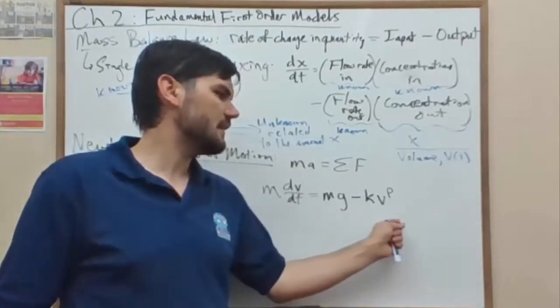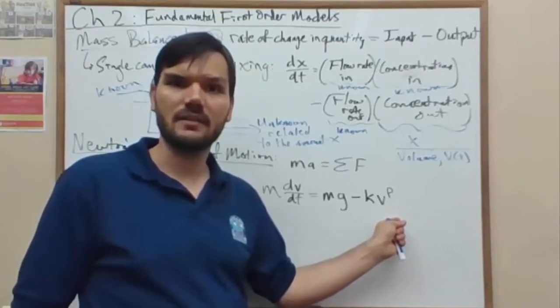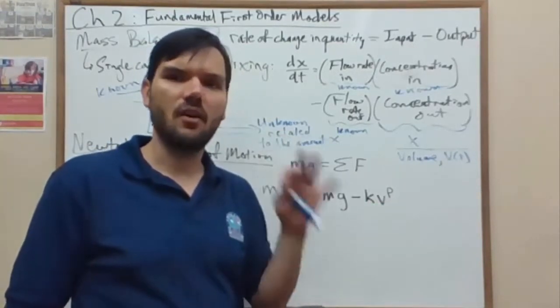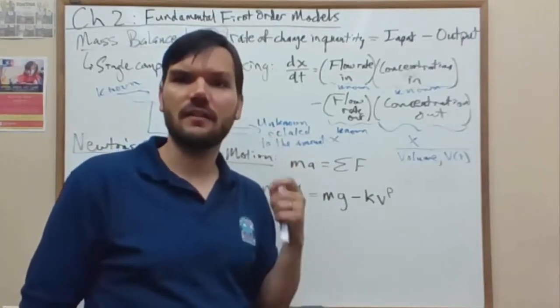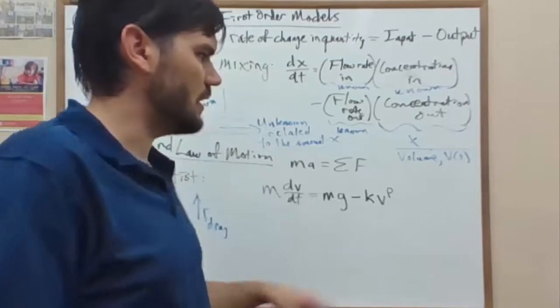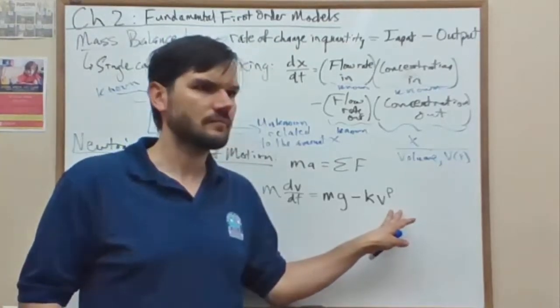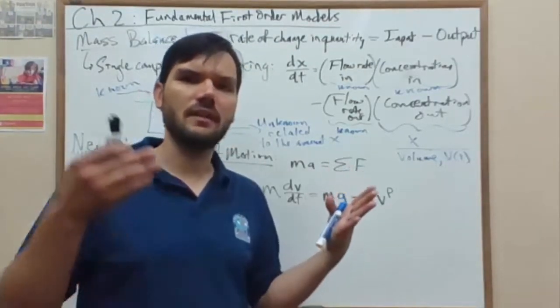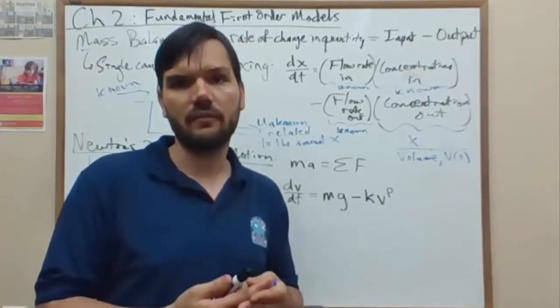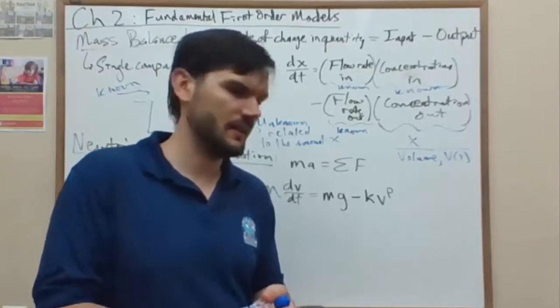Which means it can always be analyzed using a phase line or stability analysis to determine what velocity the parachutist is converging towards as they fall. We call that velocity the terminal velocity.